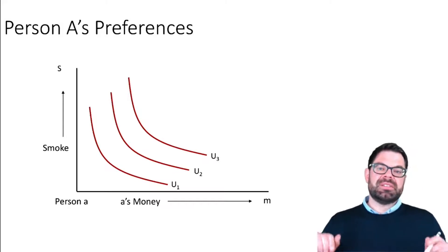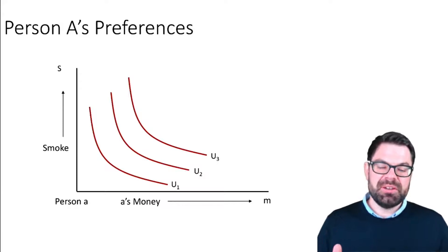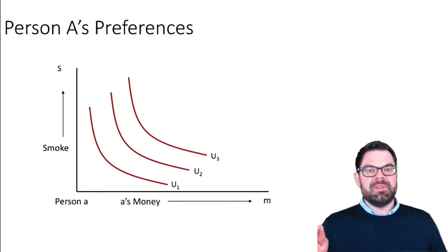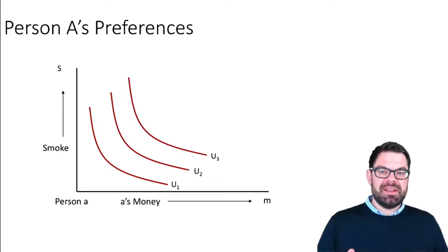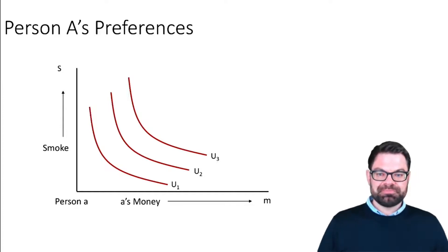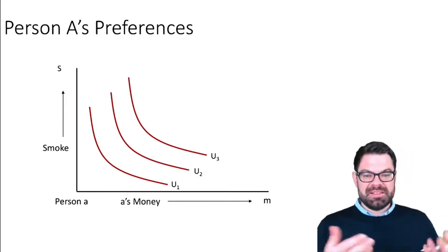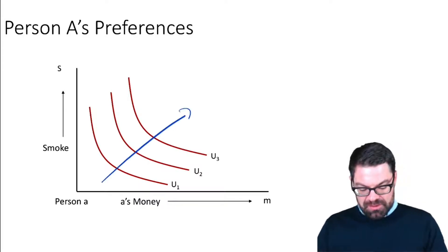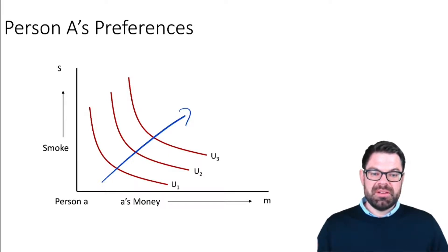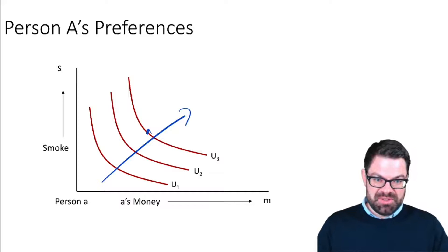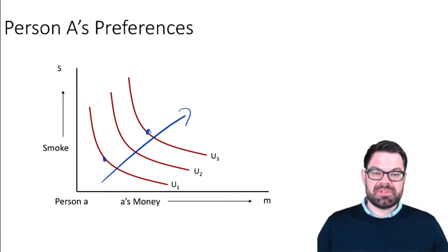To analyze this, we start again with the Edgeworth box. We have to look at each consumer separately first, and then put them together. For person A, the smoker, matters are very clear: utility levels are represented by indifference curves, and the more the person smokes, the less money the person can spend on other things. So there is a trade-off between smoking and money. The further we go from the origin, the better, because the person can smoke more cigarettes and has more money to spend on other things.